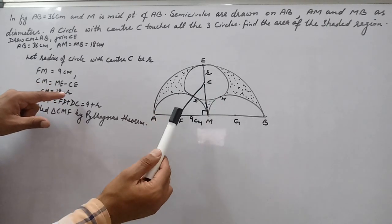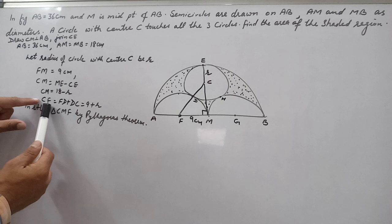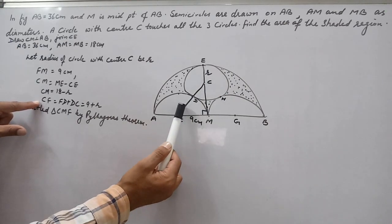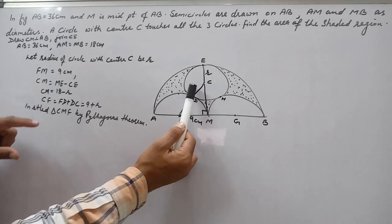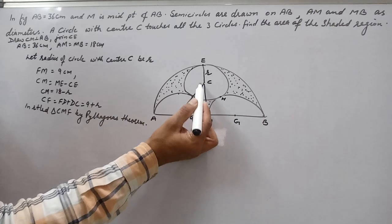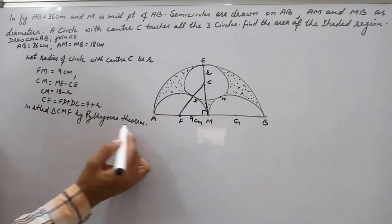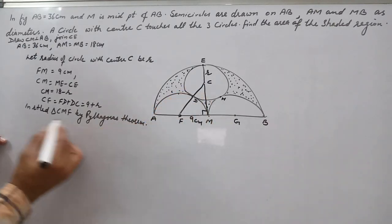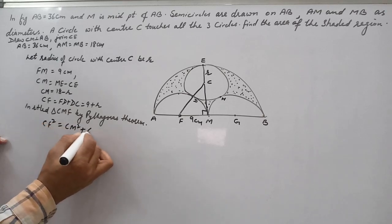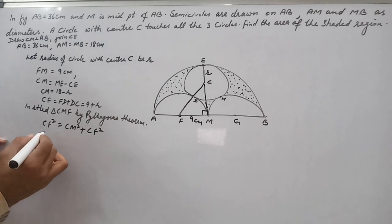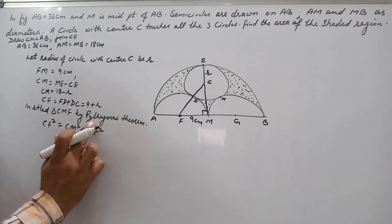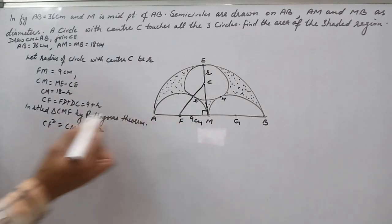Now CF is FD plus DC. So FD is 9 and DC is R, so 9 plus R. In right angle triangle CMF we apply Pythagoras theorem. So it becomes CF² equals CM² plus MF².